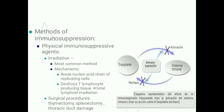Irradiation breaks the nucleic acid chains of replicating cells and destroys T lymphocytes responsible for graft rejection, also known as total lymphoid irradiation. Surgical procedures for immunosuppression include thymectomy, where the thymus is removed, splenectomy, and thoracic duct damage.